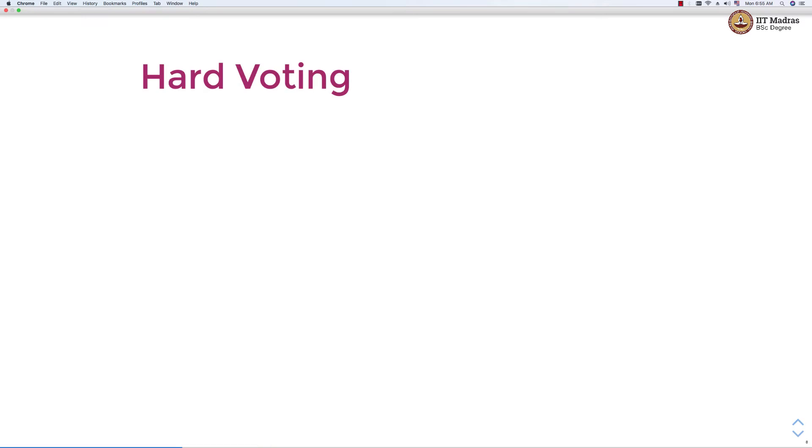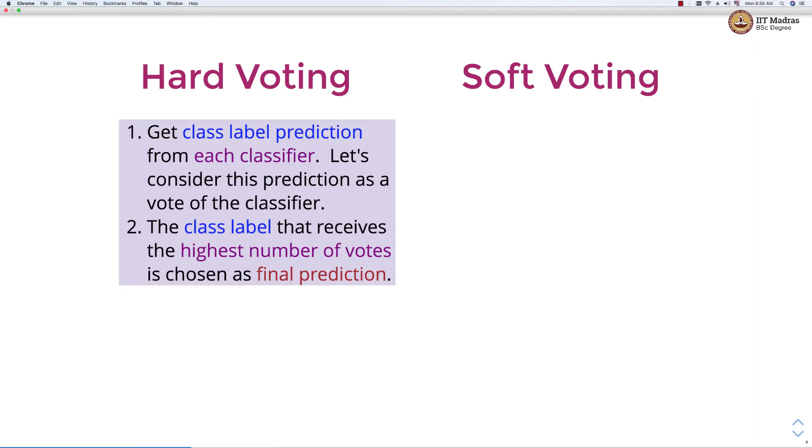There are two types of voting: hard voting and soft voting. In case of hard voting, we get class label prediction from each classifier. Let us consider this prediction as a vote of the classifier. The class label that receives the highest number of votes is chosen as a final prediction.